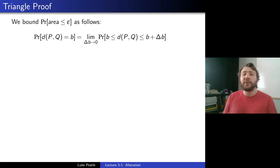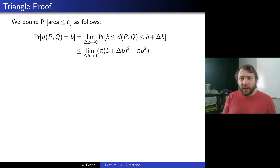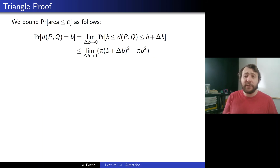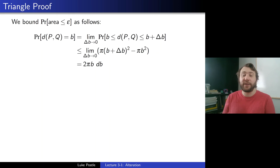First, consider two points P and Q. The probability their distance is approximately B is roughly 2πB dB — this comes from the annulus area around P: the area π(B + δB)² minus πB², which is roughly 2πB δB. So the probability density for the distance between P and Q is proportional to 2πB.